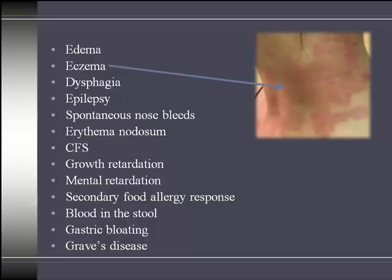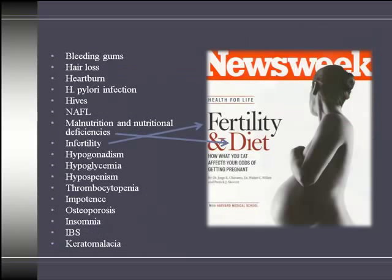Spontaneous nosebleeds are another common manifestation associated with gluten sensitivity. Further conditions include malnutrition, nutritional deficiencies, and infertility. As highlighted in a Newsweek cover story, diet and nutrition play an extremely important role in the ability of a woman and man to conceive a child — a person with gluten intolerance suffering from malabsorption or nutritional deficiencies will very often have problems conceiving.